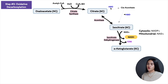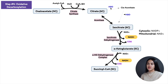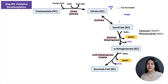Step four is another oxidative decarboxylation: alpha-ketoglutarate is oxidized to form succinyl-CoA and carbon dioxide, catalyzed by the alpha-ketoglutarate dehydrogenase complex. NAD⁺ is reduced to NADH, which carries electrons to the respiratory chain. Energy is also conserved in the thioester bond of succinyl-CoA, which — as mentioned — has a large negative standard free energy of hydrolysis, important for the next step.